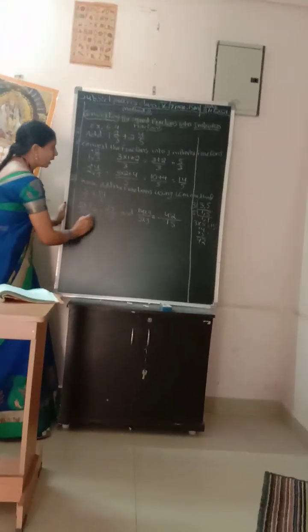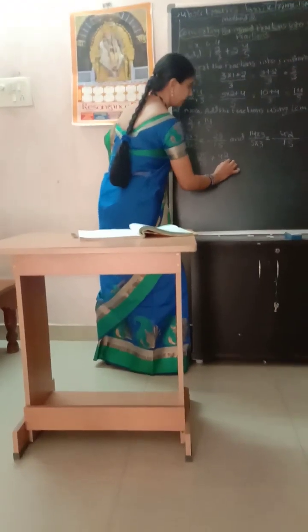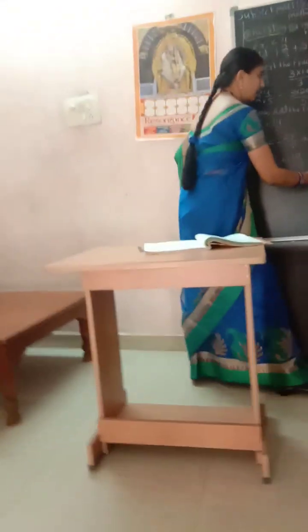When you add the fractions — what's the fraction? 25 plus 42 by 15. The denominator is the same. What's the fraction? The answer is 67 by 15.